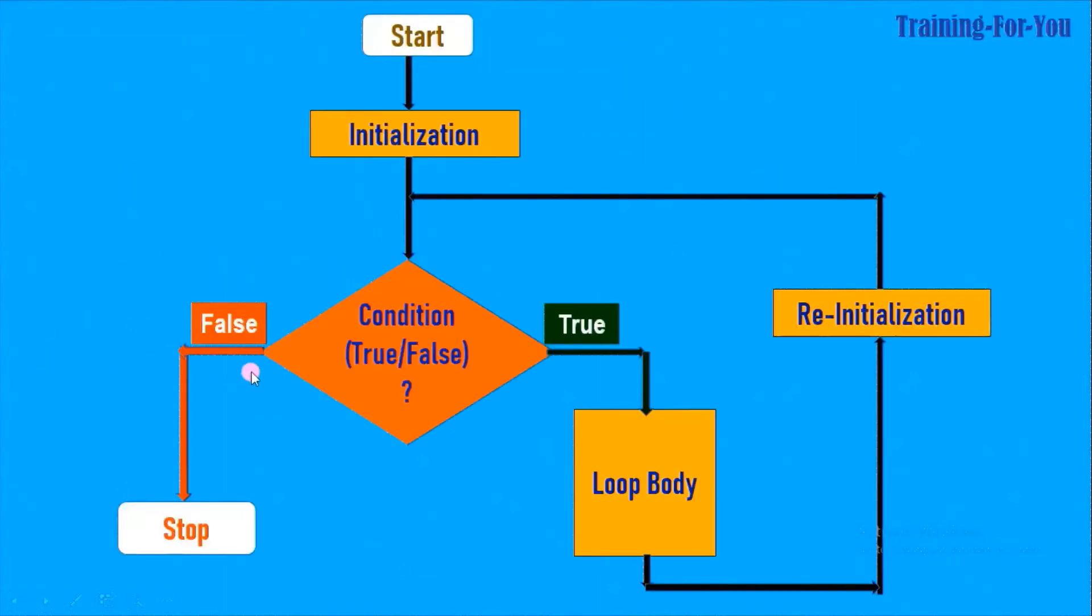Let's see the flow chart. The initialization takes place only once, then the condition is tested. If it is true, enters into the loop body. After the body is executed, goes to re-initialization, then again the condition. This way it continues. The moment this condition results in a false value, the execution stops.